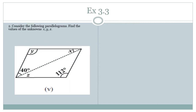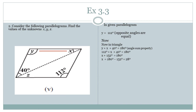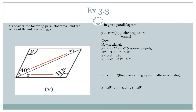Last part: in the parallelogram, 112 degrees is given. Its opposite angle is Y, and opposite angles are equal, so Y equals 112 degrees. In the triangle, the three angles are X, Y, and 40 degrees. By the angle sum property, their sum is 180 degrees. Substituting Y and simplifying, X equals 28 degrees. A Z formation again indicates alternate angles, so Z equals X, which is 28 degrees. So X and Z both equal 28 degrees, and Y equals 112 degrees.